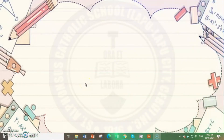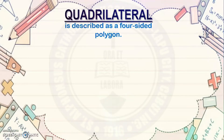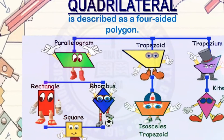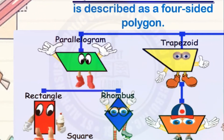When you were in grade 7, you learned about quadrilaterals. A quadrilateral is described as a four-sided polygon wherein the sides are segments, and the endpoints of which are referred to as vertices.